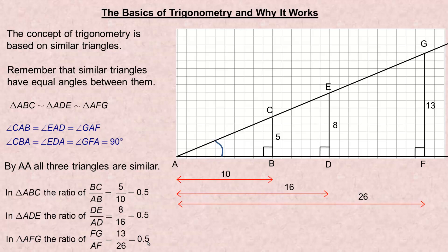The ratio of the vertical side to the bottom side is the same for all the triangles, and it doesn't matter how large we scale up the triangle or scale down. If I were to draw a little side right here, 2 divided by 4 would also be 0.5. Or if I made it really small, 1 divided by 2 is still 0.5. So for this particular angle, the ratio of the side across from it divided by the bottom side is the same no matter how large or small we scale the triangle. When you hear somebody talking about the sine, cosine, or tangent of an angle — those three trig ratios — it is actually the ratio of two sides in a triangle. That is why trigonometry actually works.